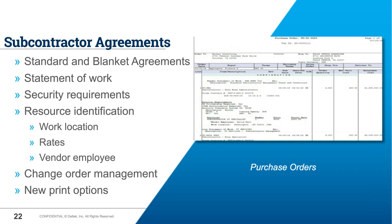Change order management has been upgraded to also track changes to the statement of work, which is very important as subcontractor agreements always have many modifications — the statement of work outlines the rules and specifications of what the agreement covers. There are new print options as well — you can print all this information, including vendor employee names, on your hard copy of the purchase order if desired. This is set up in print options for what subcontract management pieces you want to print.